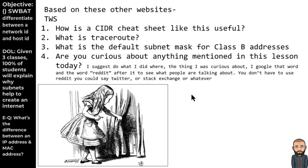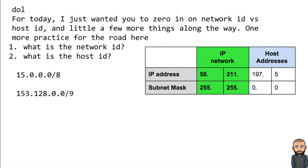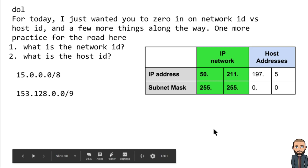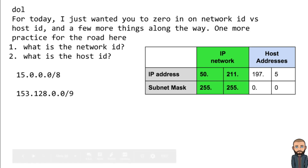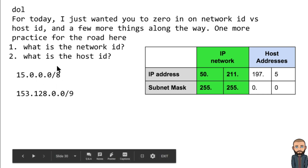Just because we spent time on those other websites, here's a slew of ThinkRight share questions to answer: How is a cheat sheet like the one I showed you useful? What is traceroute? What is the default subnet mask for a Class B address? And are you curious about anything else I mentioned in the lesson today? That's your DOL for today — I just wanted you to zero in on this network ID versus host ID portion. One more practice for the road: what is the network ID and what is the host ID of these two numbers?